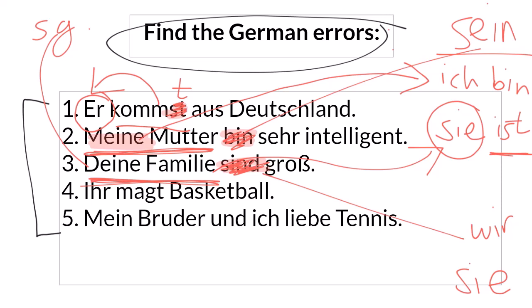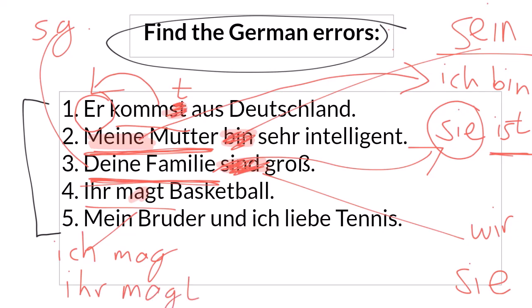Number four: 'ihr magt Basketball' sounds very wrong because the vowel in the verb is wrong. People see 'ich mag' in the conjugation of 'mögen' and think the ihr form just adds a 't'. But the second person plural ending always comes from the infinitive — 'mögen' — so you chop off the 'en' and add 't': ihr mögt Basketball. You guys like basketball.